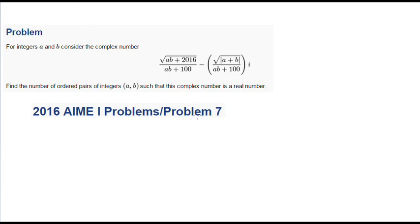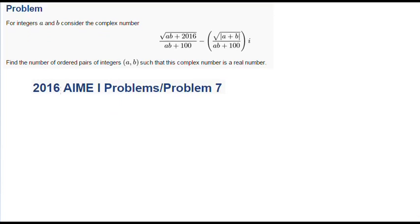So here's the solution to the problem. Now if you look at this problem, you'll notice that there are two cases. On the right side, you have square root of the absolute value of a plus b. We know that the coefficient of i in this case must be real. However, the real part of this complex number could either be real or complex, depending on whether ab plus 2016 is positive or negative. So you have two cases here.